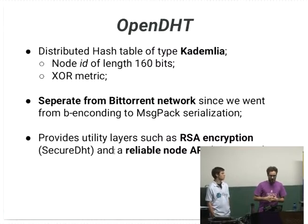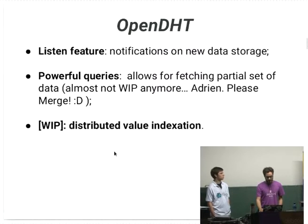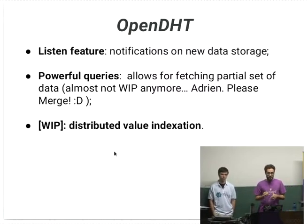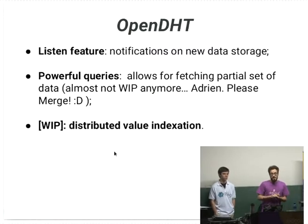There are other distributed hash tables that already exist, but we wanted specific features such as the listen feature, which enables each node to be notified of new data storage. We also implemented powerful queries allowing you to fetch a partial set of data on the network, which could reduce traffic. Another work-in-progress feature is value indexation over the DHT. If you want to contribute or learn more about the OpenDHT project, you can do so on GitHub — here's the link.